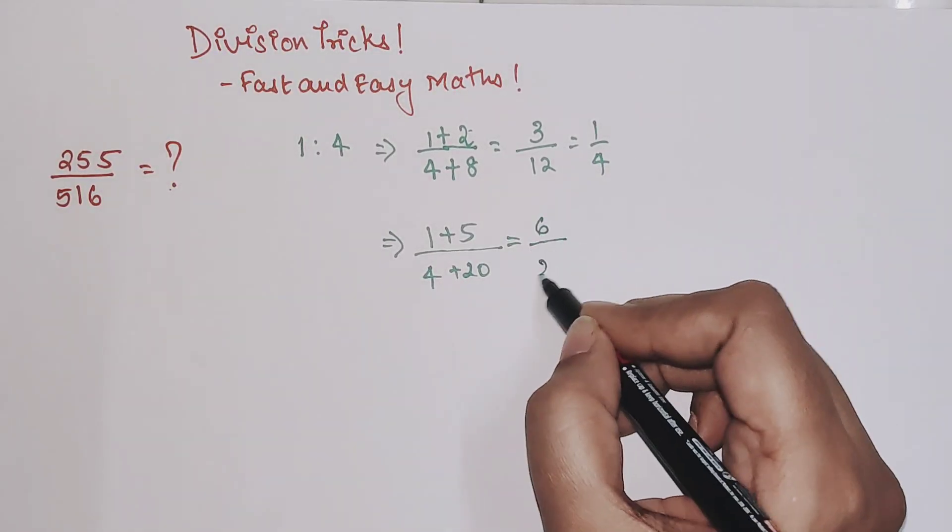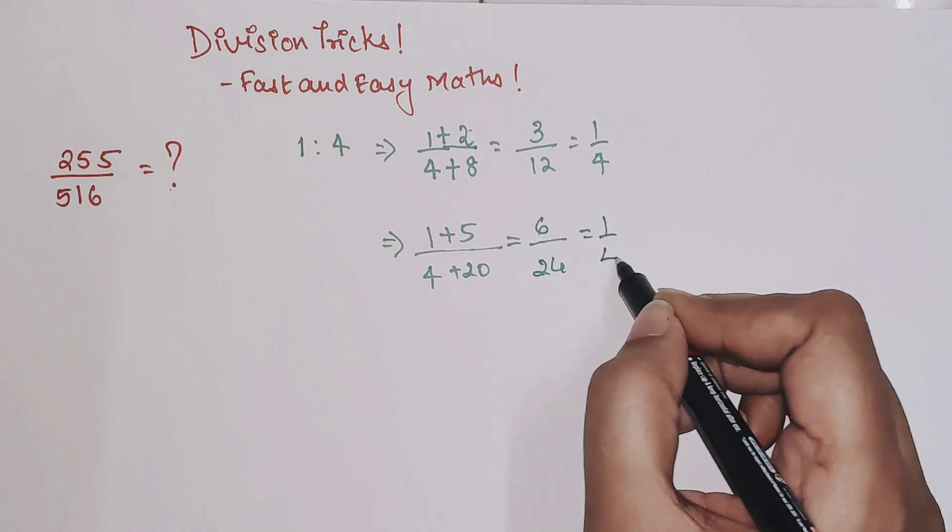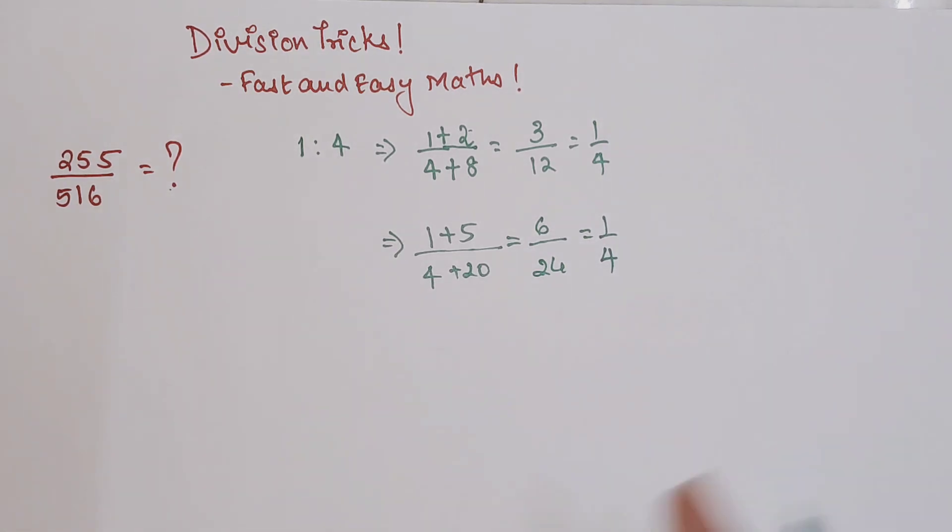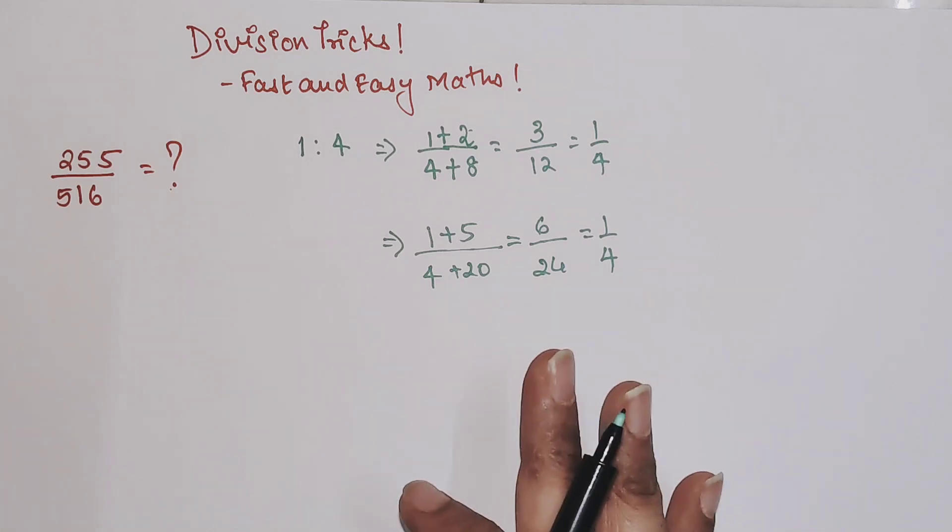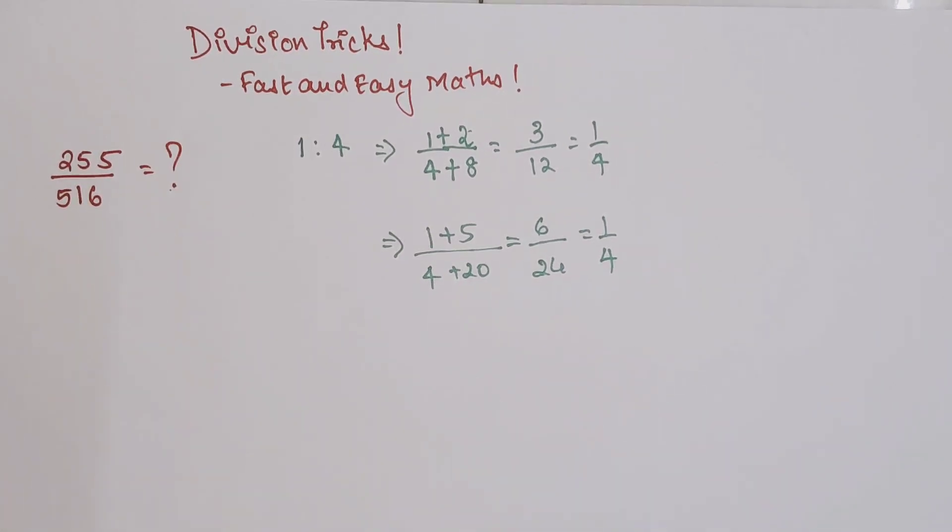Because we need to make sure that the ratio, even in addition, is followed. You get 6/24 which is eventually 1/4. I hope you've gotten the idea. Whatever you are adding, you have to make sure that the ratio remains the same.